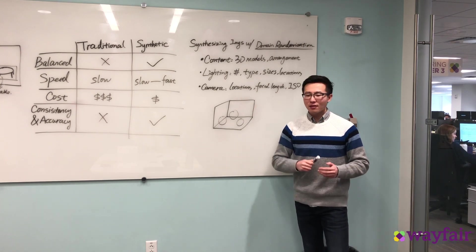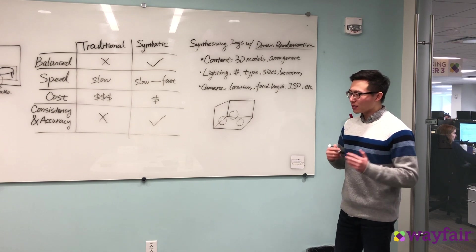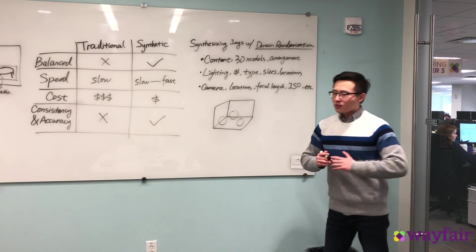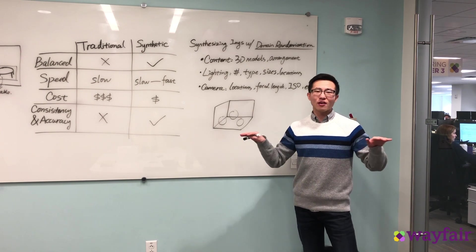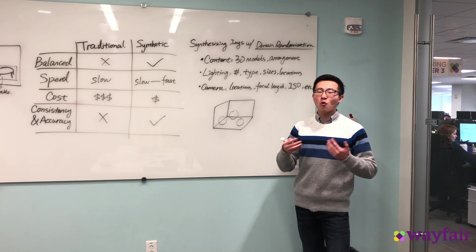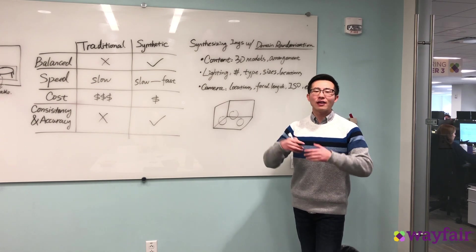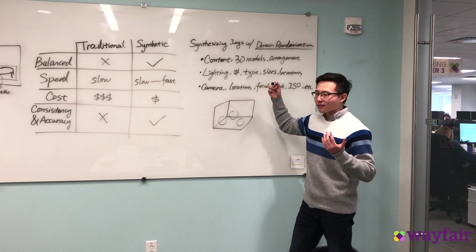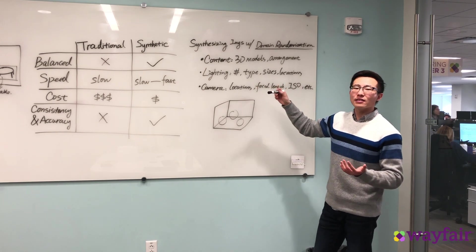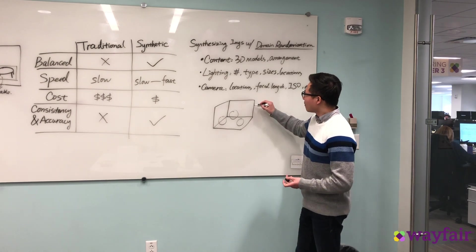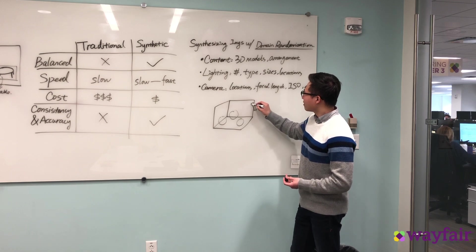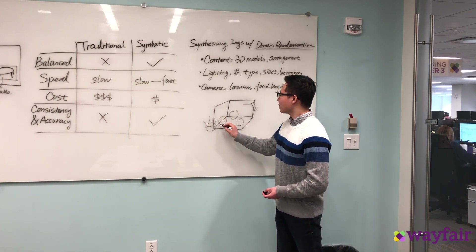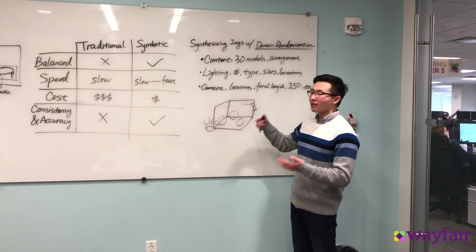Another thing we don't know is under what lighting condition the image is taken. As you can imagine, an image can be taken in a dark or bright environment — it could be in the morning or the afternoon. If all images are gathered with the same lighting, the network will easily overfit and won't generalize at test time. So we introduce different lights with different types, various sizes, and placed in different locations — for example, a plain light shining in one direction and a dome light providing ambient light so objects are lit in different ways.